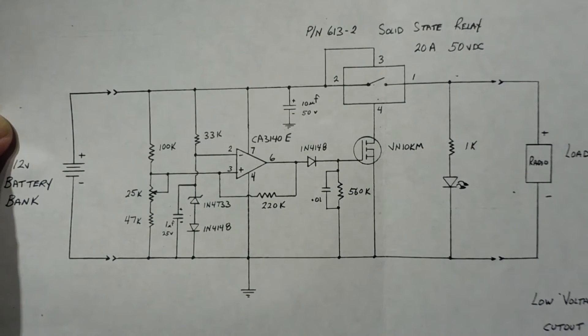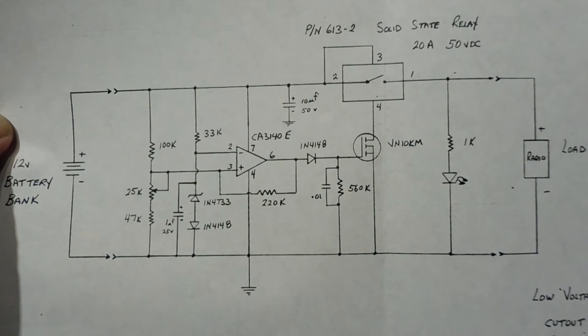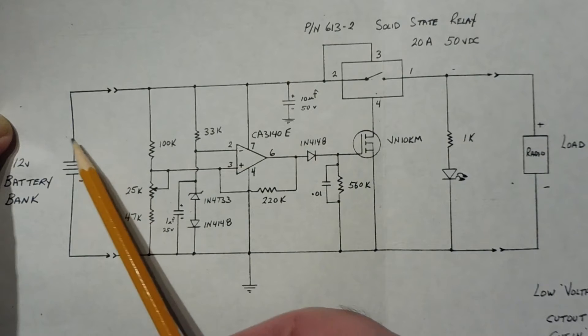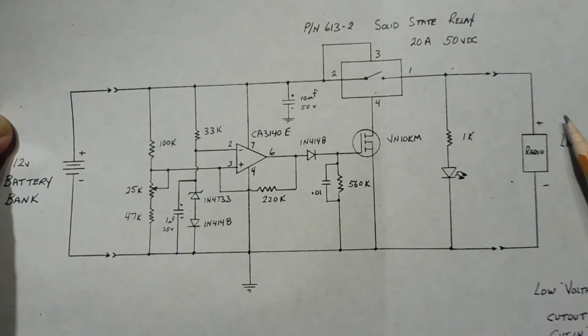Okay, here's the schematic diagram of my low voltage cut-out box. On the very left, you can see the 12-volt battery bank input. There's my batteries, which are feeding my load, which is on the very right.